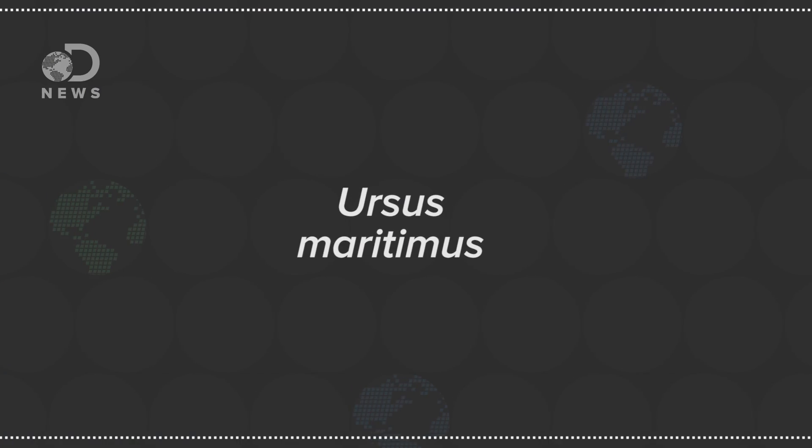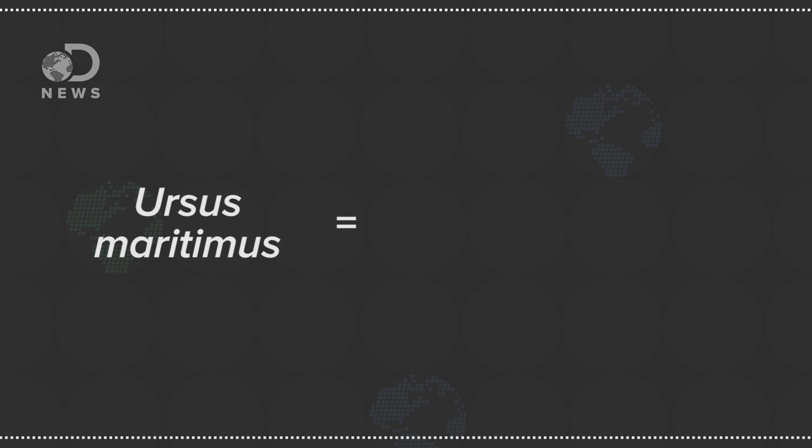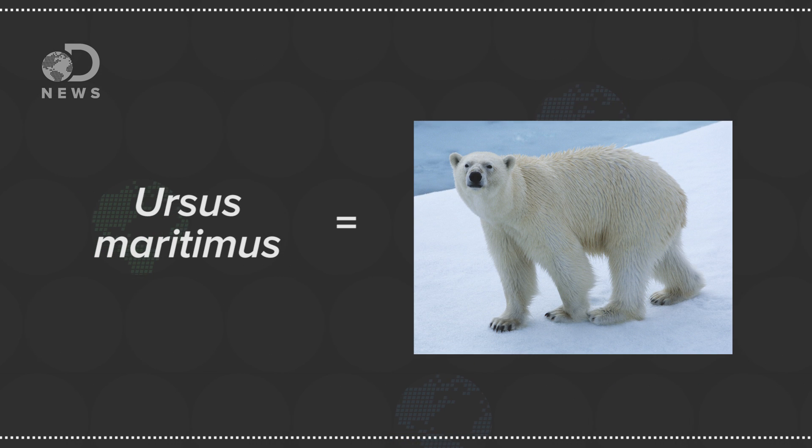For example, we used to use the word dank to describe your cellar, not your memes. But Ursus Maritimus will likely always be the Latin name for those carnivorous white monsters roaming around the Arctic Circle, whereas polar bear could be, and probably is, a slang term for a weird sexual act. I don't know, somebody look it up on Urban Dictionary. Actually, don't.